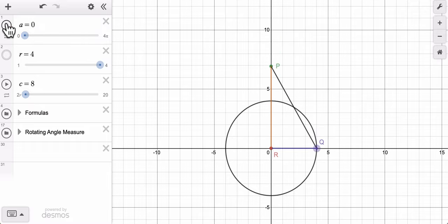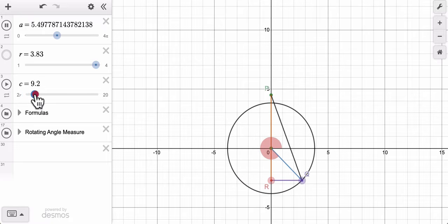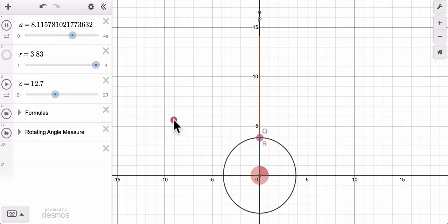Anyway, this is what a more dynamic approach to the model looks like. It shows the angle, it enables me to change the radius, and it enables me to change the distance between P and Q. All right, thank you.